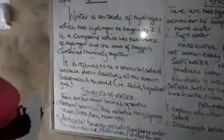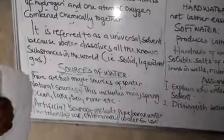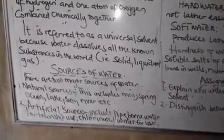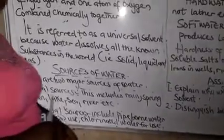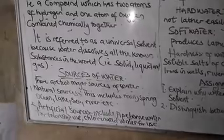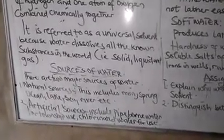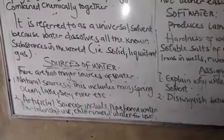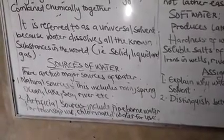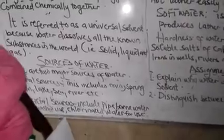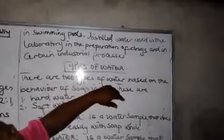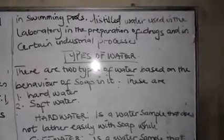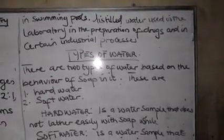There are two major sources of water. The first is the natural source, which includes rain, spring, lake, sea, river, etc. The second source is artificial sources, which include pipe water for domestic use, chlorinated water for use in swimming pools, and distilled water used in the laboratory in the preparation of drugs and certain industrial processes. This type of water you can also call treated water.